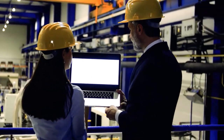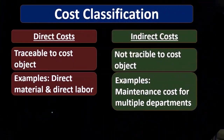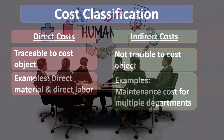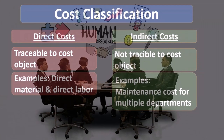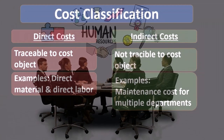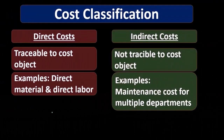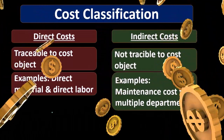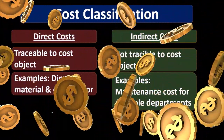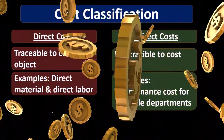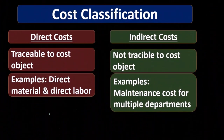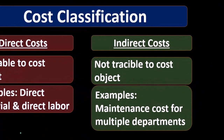We can take that concept to different departments as well. If we pay for maintenance for multiple departments, the maintenance is there for multiple departments but it's difficult to allocate to a particular department. We're going to have to figure out some type of way to allocate these indirect costs — that's going to be one of the challenges we have. If we have maintenance for multiple departments or multiple units of inventory, how can we take this information and allocate it to a particular unit?